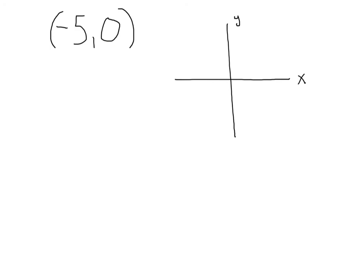Let's do an interesting case. Here we've got the point (-5, 0). Going over to negative 5 gives a side length of negative 5. With y equal to 0, I'm not going up or down at all — I stay right on the x-axis. So x equals negative 5, y equals 0. For r, I could use the Pythagorean theorem — square root of 5 squared plus 0 squared — or just count it: the distance is 5, positive, because it's a distance.